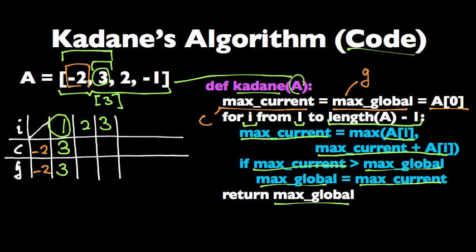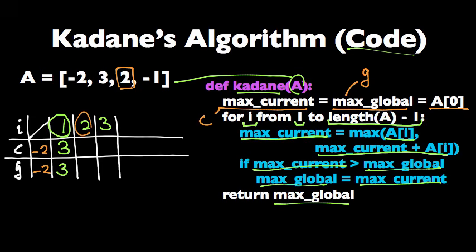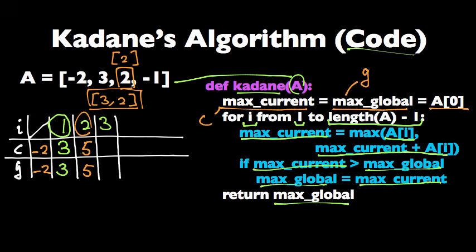Let's do the same for the other indices. For index 2, the element is 2. What's the maximum subarray ending here? It's either 2, or 2 combined with the previous maximum subarray, giving 3, 2. Obviously 3, 2 has the larger sum, so we pick that, update the current sum, and update the global sum as well. For the last index, the current sum is going to be 4, and we're not going to update the global sum because the global sum is larger. At the end, we return the global sum, which corresponds to the maximum subarray — in this example, 3, 2.